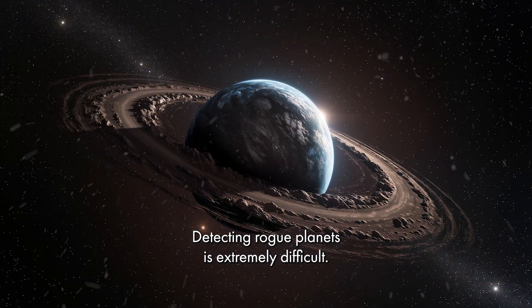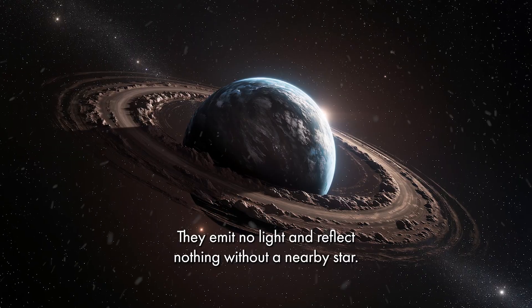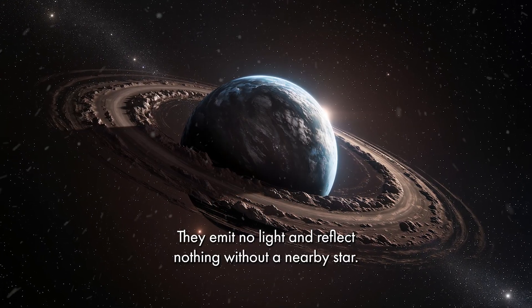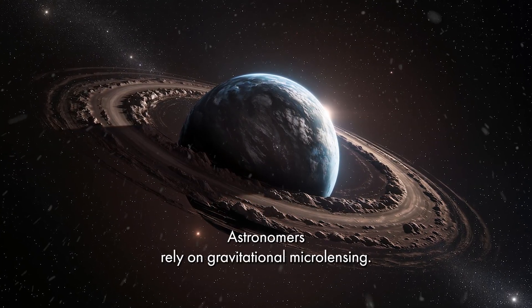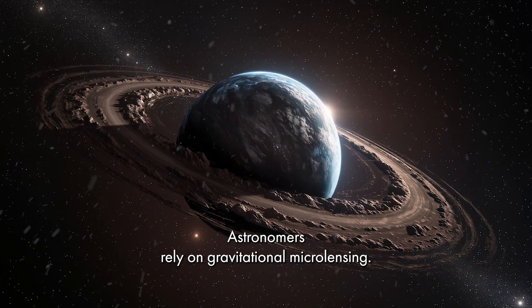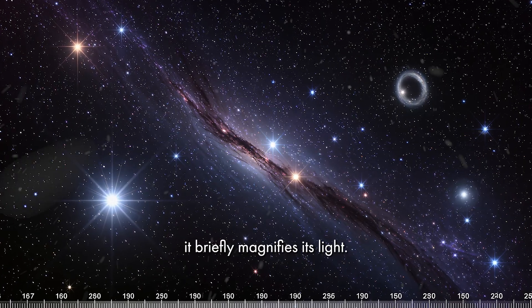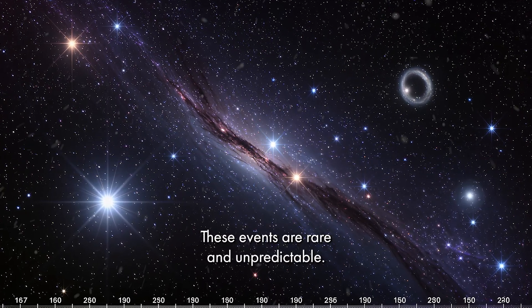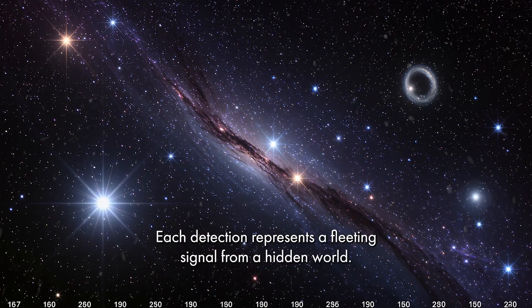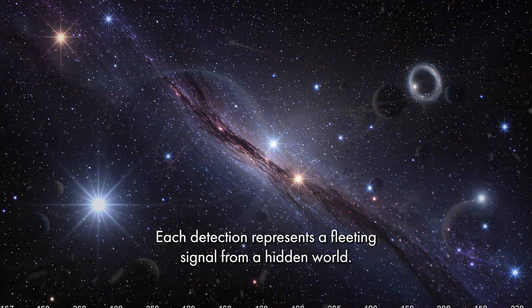Detecting rogue planets is extremely difficult. They emit no light and reflect nothing without a nearby star. Astronomers rely on gravitational microlensing. When a rogue planet passes in front of a distant star, it briefly magnifies its light. These events are rare and unpredictable. Each detection represents a fleeting signal from a hidden world.